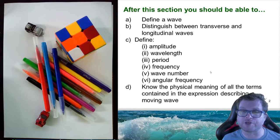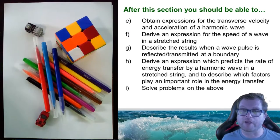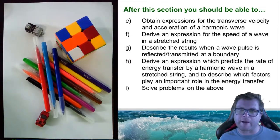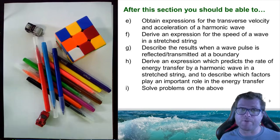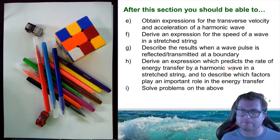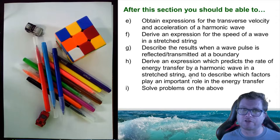We also cover the physical meaning of all the terms contained in an expression for describing a moving wave. We go on to look at the transverse velocity and acceleration of a harmonic wave and derive the expression for the speed of a wave in a stretched string. Then we look at boundary conditions — what happens when a wave traveling on a string reaches the end — and derive an expression for the rate of energy transfer by a harmonic wave in a string, followed by solving problems on each of these topics.